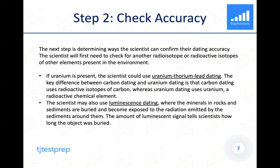The key difference between carbon dating, which is what they were using, and uranium dating is that carbon dating uses radioactive isotopes of carbon, whereas uranium dating uses uranium, a radioactive chemical element. The second strategy is that scientists could also use luminescence dating, where minerals in rocks and sediments are buried and then become exposed to the radiation emitted by surrounding sediments. The amount of luminescent signal tells scientists how long the object has been buried.